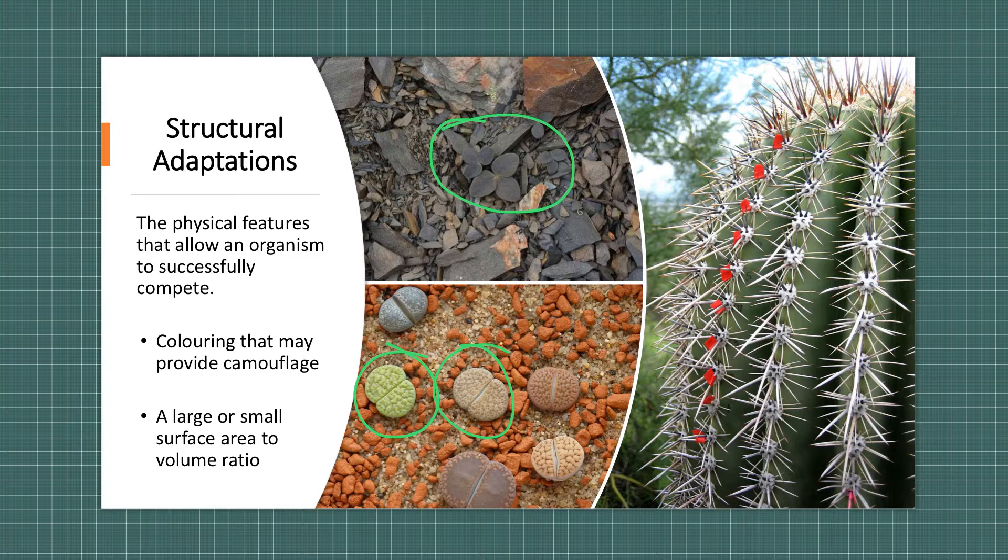Another structural adaptation is a large or small surface area to volume ratio. In this example I have a cactus and they have spines that basically reduce the surface area to the volume, therefore limiting the loss of water. Other adaptations are swollen stems for storing water. They also have very deep roots and shallow roots as well for when it rains heavily.